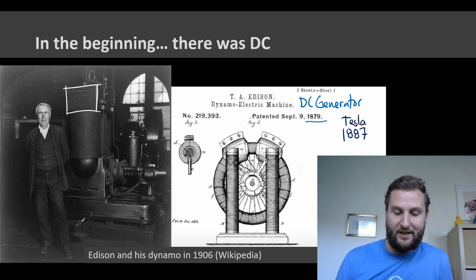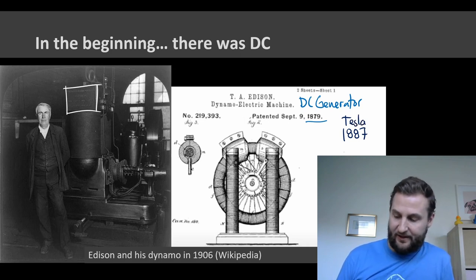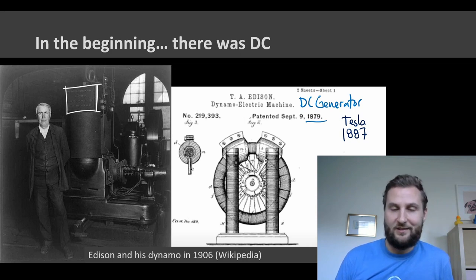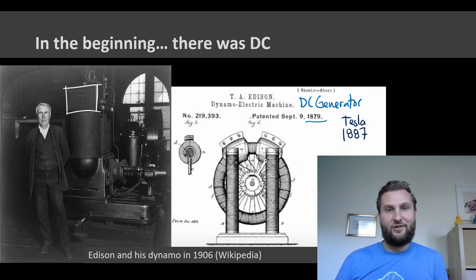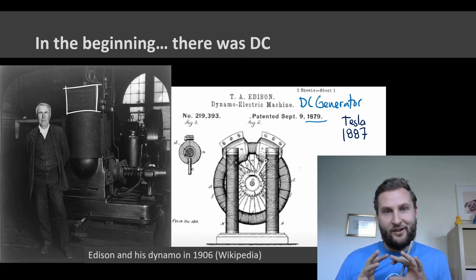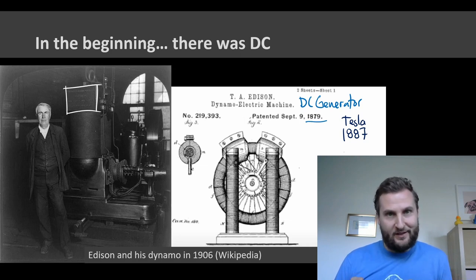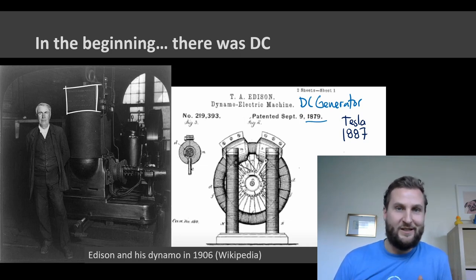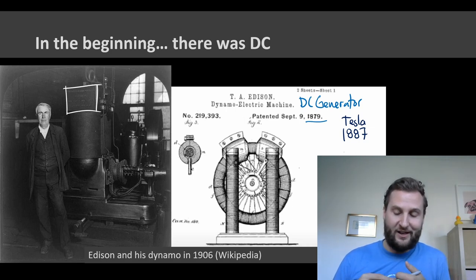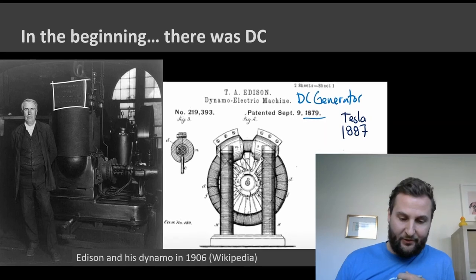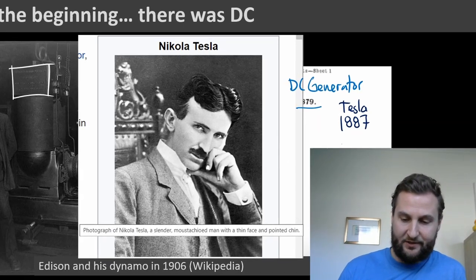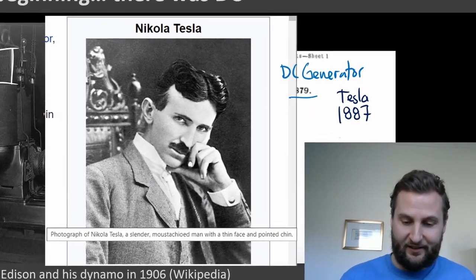Tesla came up with a competing system to Edison's DC system. Edison envisioned a whole DC network where you generate power and all customers consume direct current, but there was a problem: you cannot transmit DC power over very long distances. This is called line loss, and we'll look at this in a second. The way around this was figured out by Nikola Tesla.